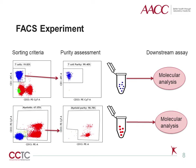This is an example of a FACs experiment in which T-cells and myeloid cells are sorted using antibodies to CD3 and CD33. The downstream molecular assay requires greater than or equal to 98% purity for each lineage in order to reach the required sensitivity. Once the cells are sorted, an aliquot of the sorted fractions can then be rerun through the sorter to assess purity. The T-cells and myeloid cells go from 20% and 67% respectively in the unsorted sample to both achieving the required 98% purity in the sorted fractions.